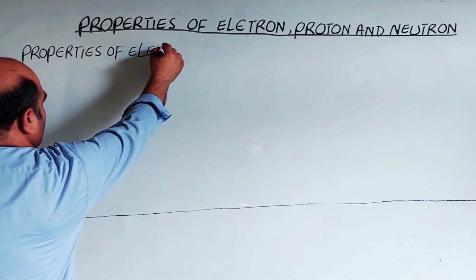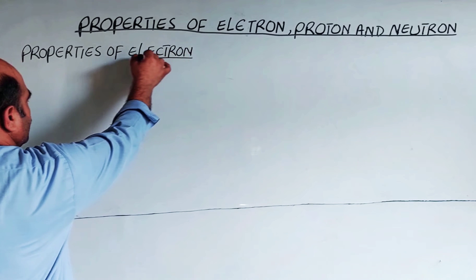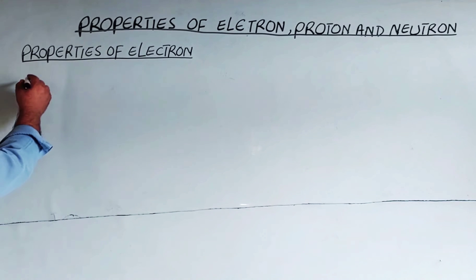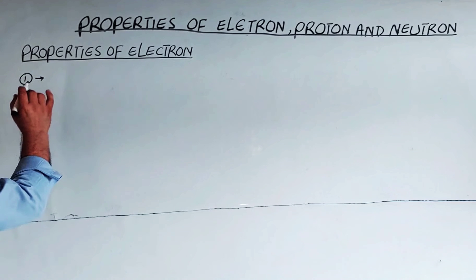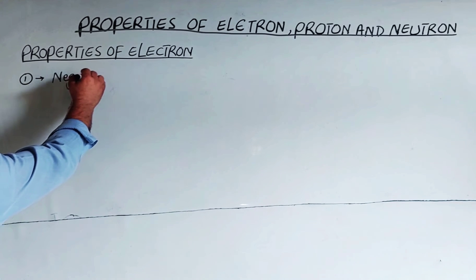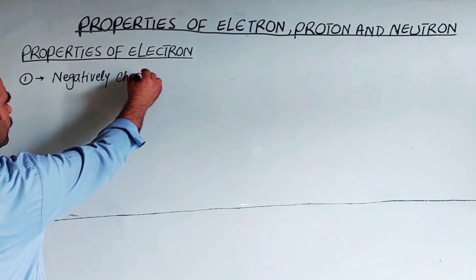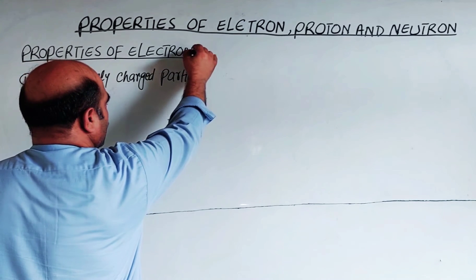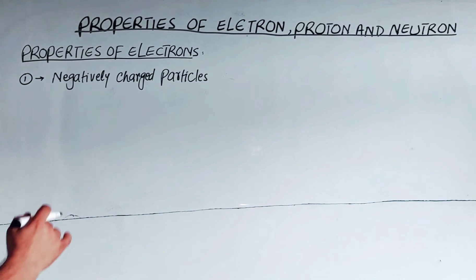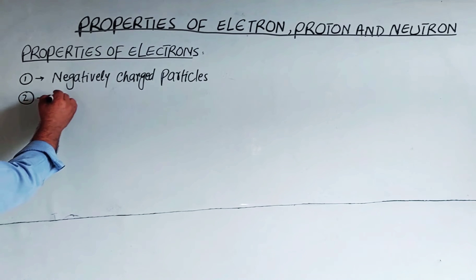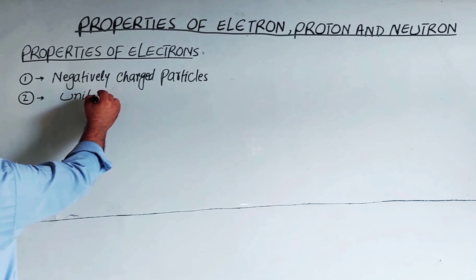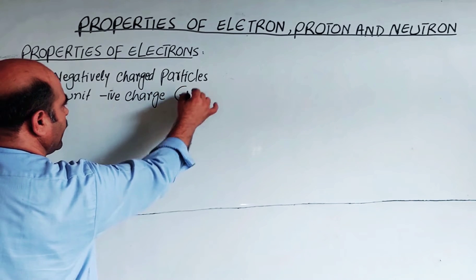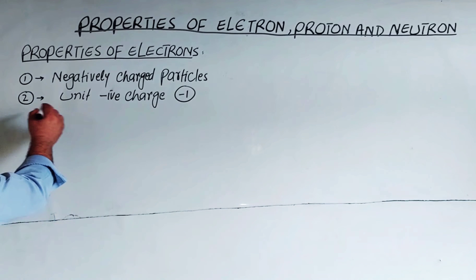The electron has three characteristics: its charge, its mass, and its position in the atom. The first property: electrons are negatively charged particles. The electron has a unit negative charge — it has a negative charge. The amount of that negative charge is unit negative charge, meaning minus one charge is present on the electron.